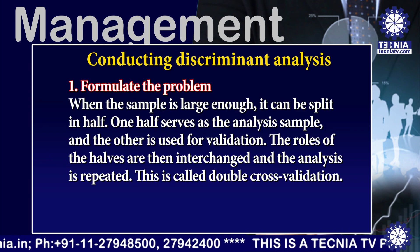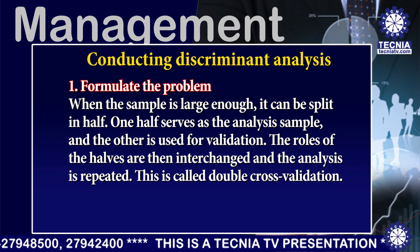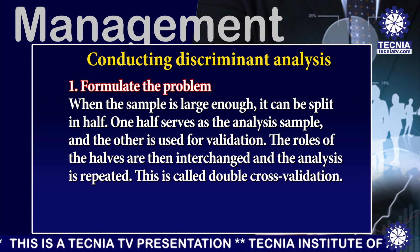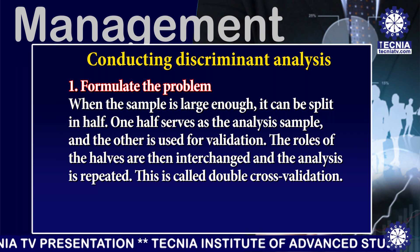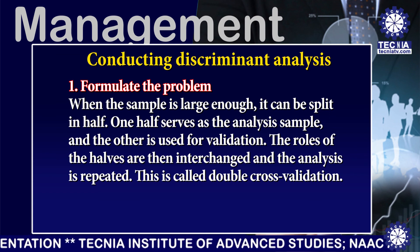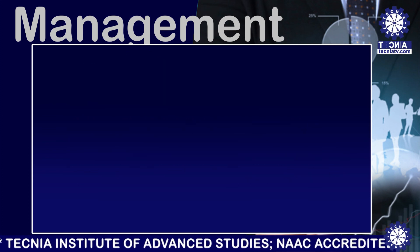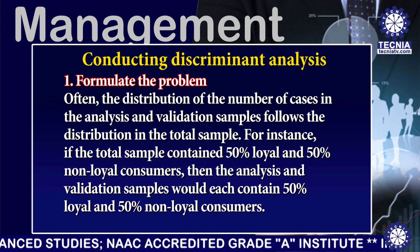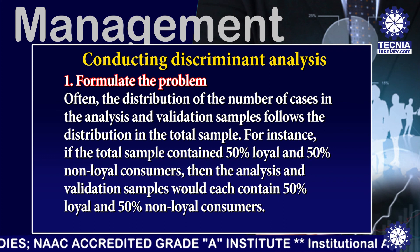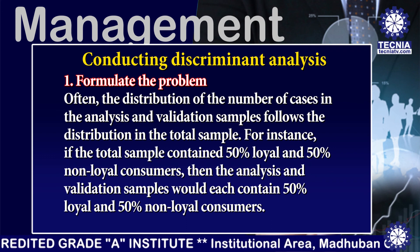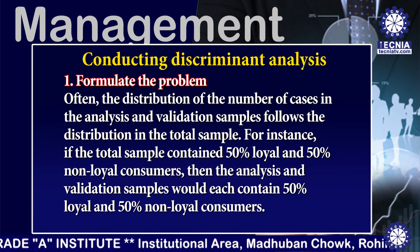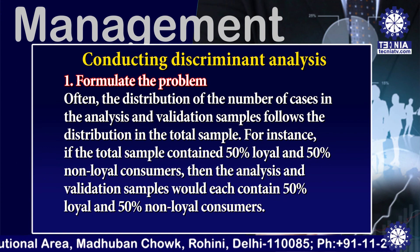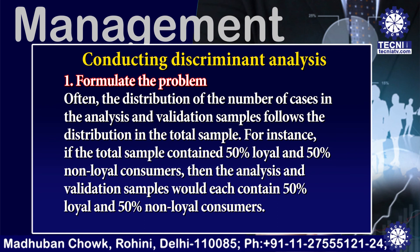When the sample is large enough, it can be split in half — one half serves as the analysis sample and the other is used for validation. The roles of the halves are then interchanged and the analysis is repeated; this is called double cross-validation. The distribution of cases in the analysis and validation samples follows the distribution in the total sample. For instance, if the total sample contains 50 percent loyal and 50 percent non-loyal consumers, both samples would each reflect that same distribution.